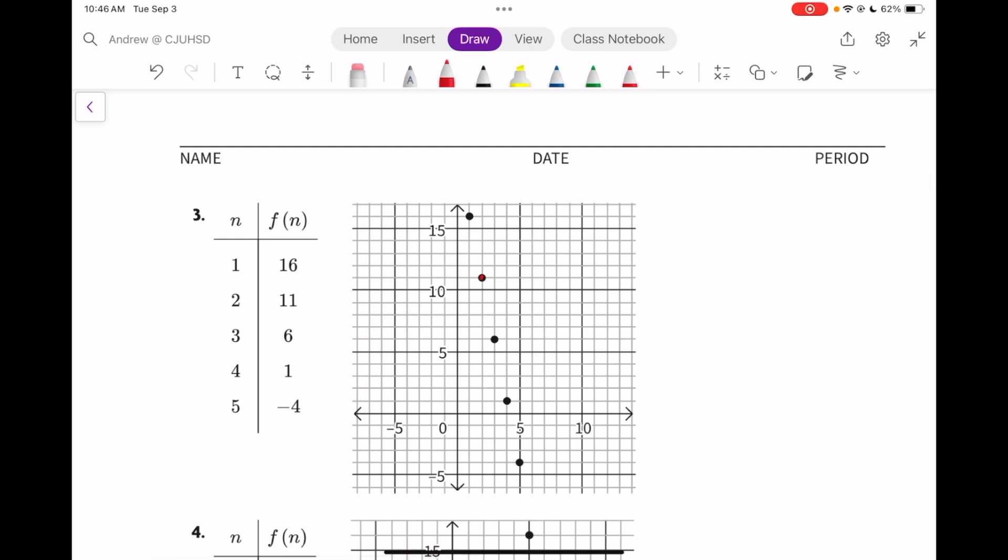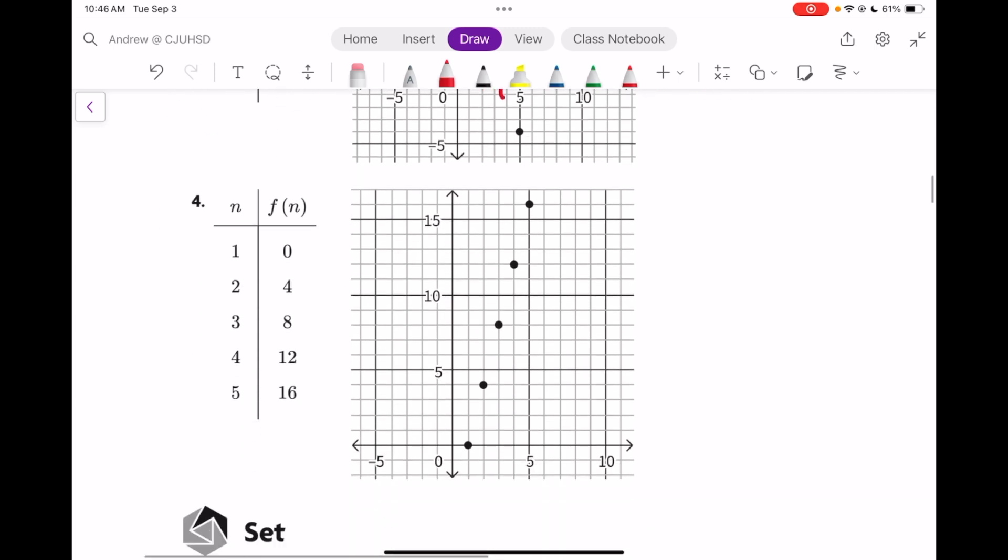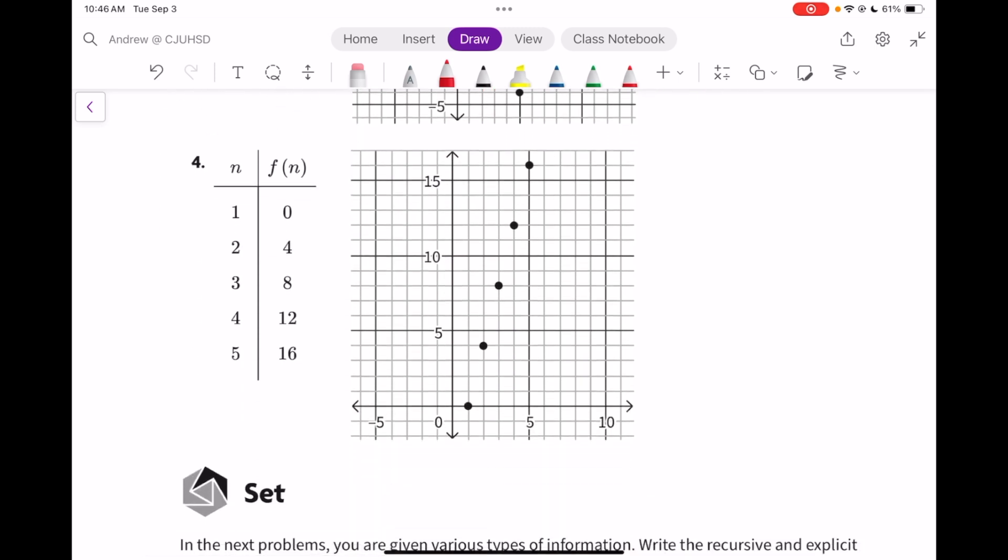And here we're going down 1, 2, 3, 4, 5, and over 1. We're going down 1 consistently, down 5, and over 1. This also has a negative 5 as a slope. In the table, we're going down 5 and up by 1.